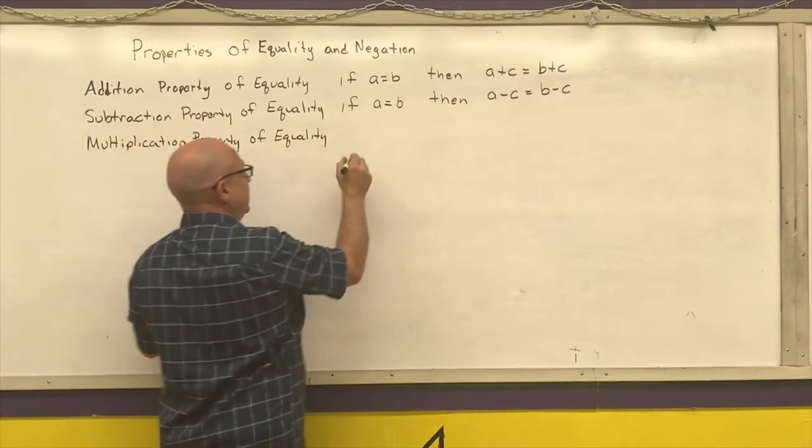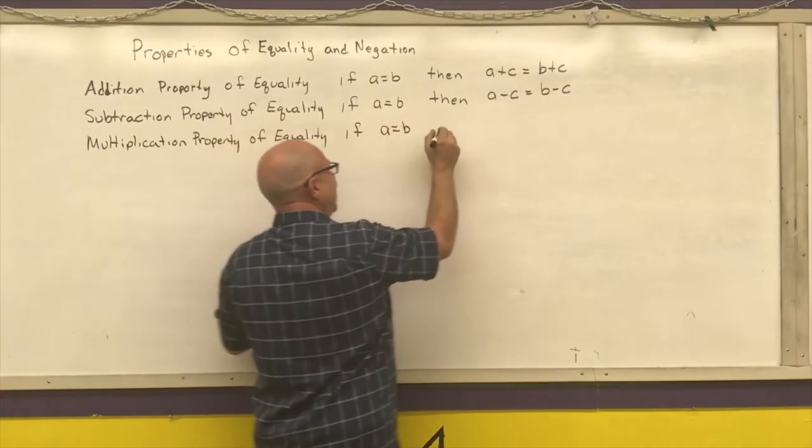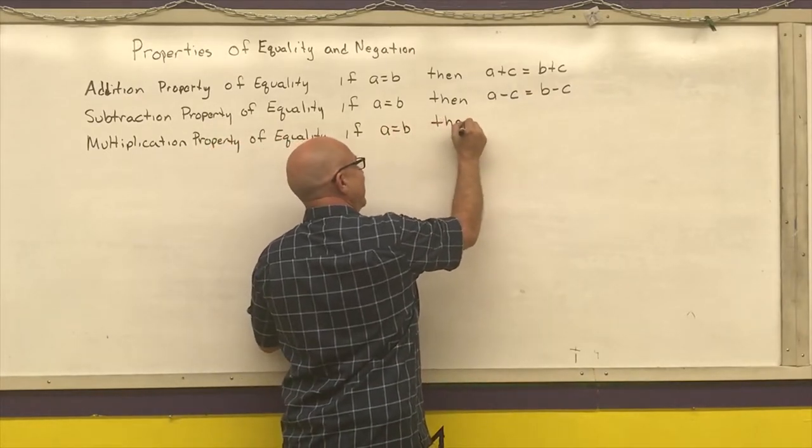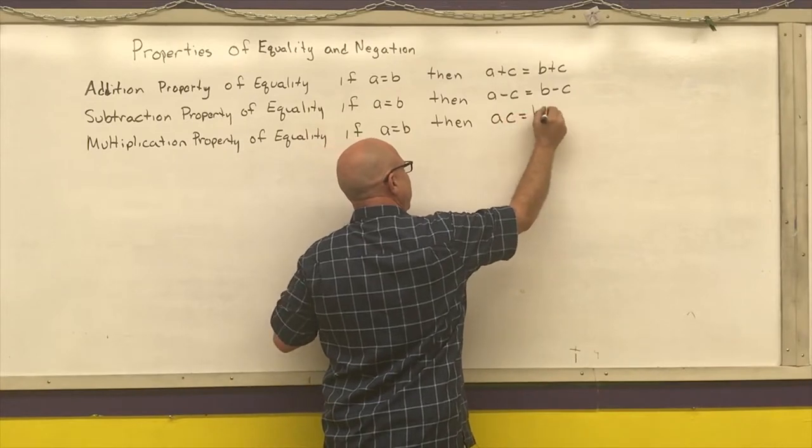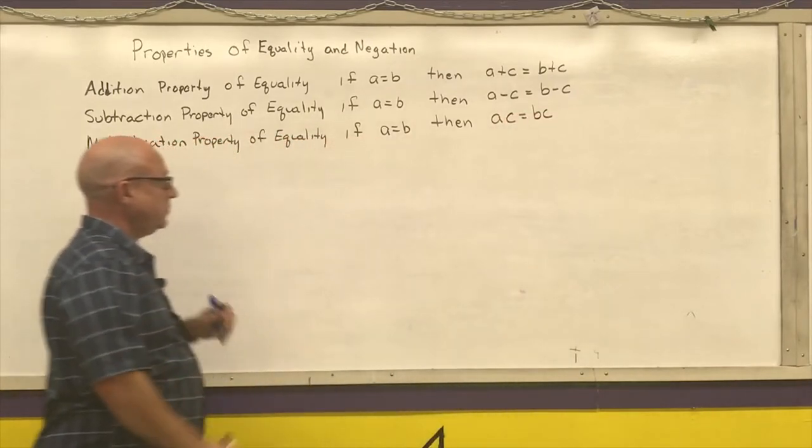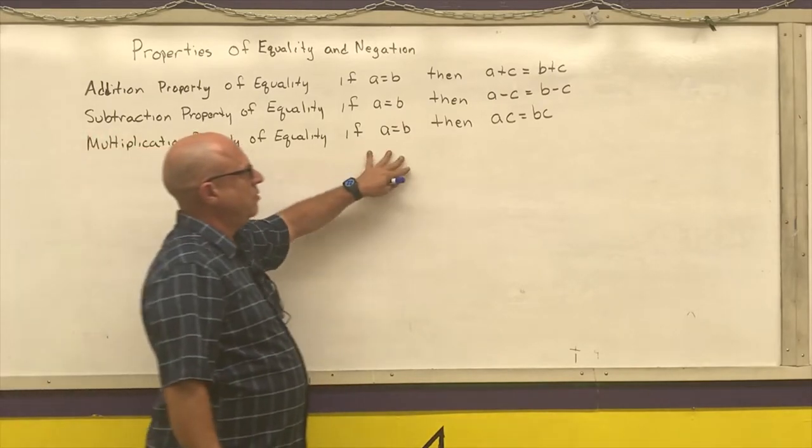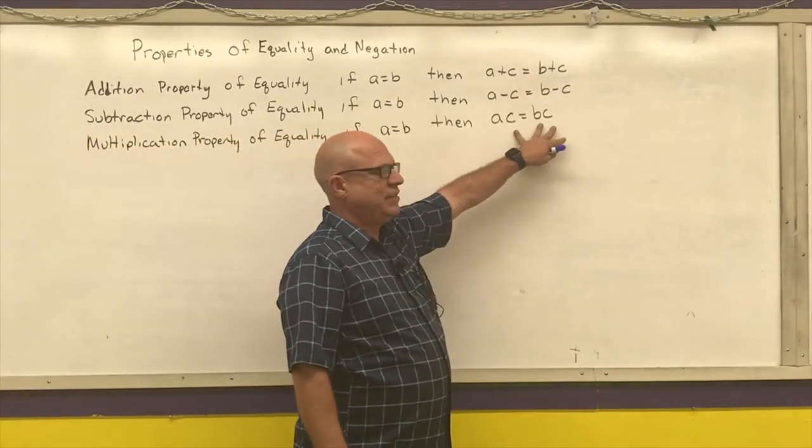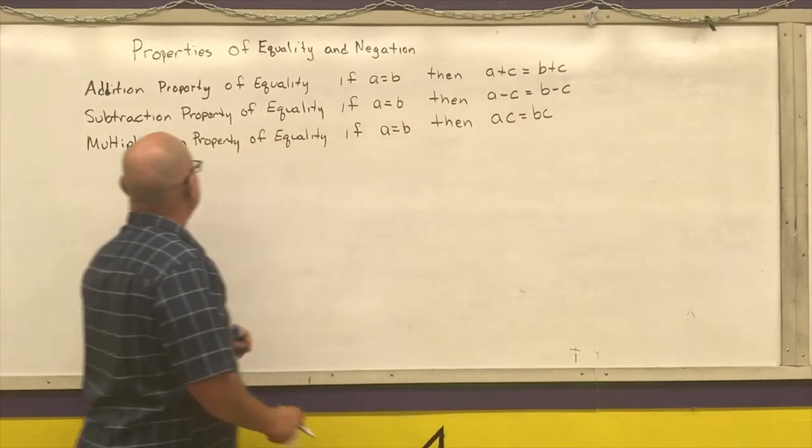Multiplication property of equality. If A is equal to B, then A times C is equal to B times C. What this is stating is if I start out with two things that are equal, then I can multiply both sides by the same number, and I will still get a true statement.